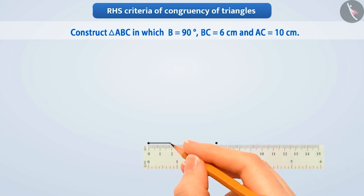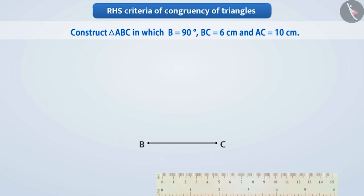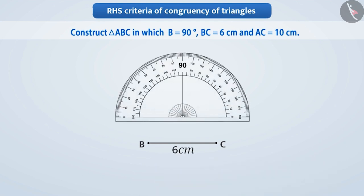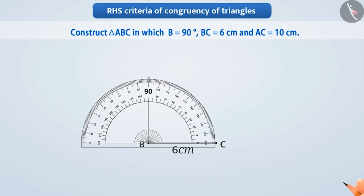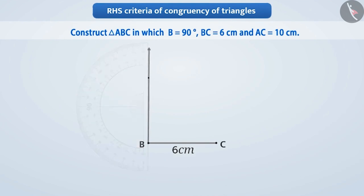For this we will draw a line segment BC which is 6 cm in length. Then we will draw a right angle from point B to BC with the help of a protractor. A will be positioned on this ray. Can you tell how we will find the position of A?